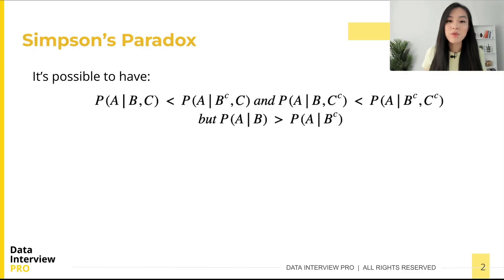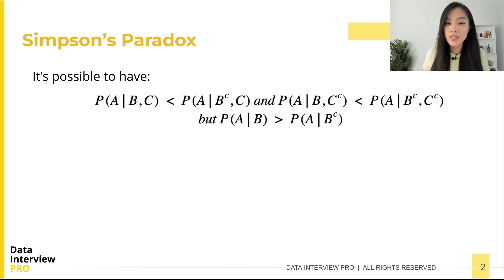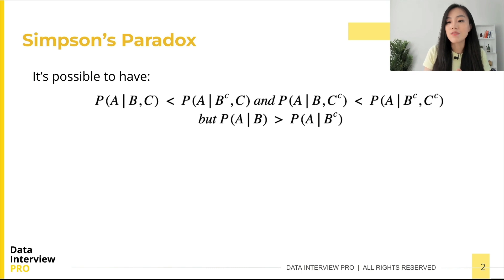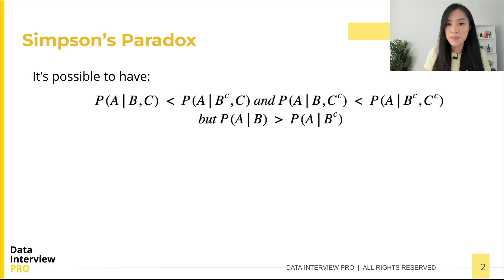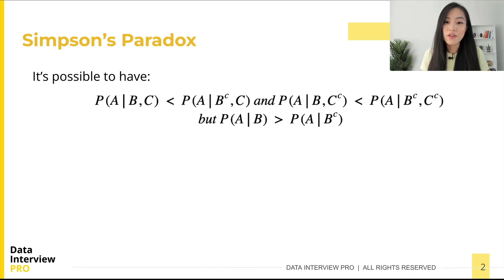Let me first give you the formal or academic version of the paradox. We observe that the probability of A given B and C is less than the probability of A given B-complement and C, and the probability of A given B and C-complement is less than the probability of A given B-complement and C-complement. But the probability of A given B is larger than the probability of A given B-complement. This formula contains conditional probabilities and the complement as denoted by the C subscript. I will now dive into this formal definition because it's not super helpful for understanding its practical implications.